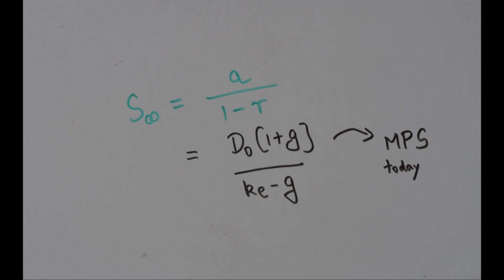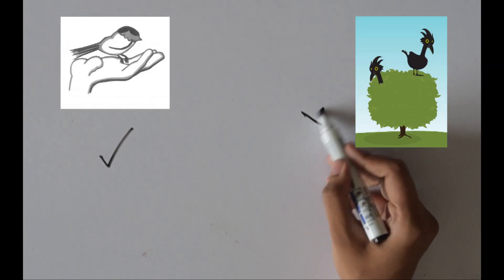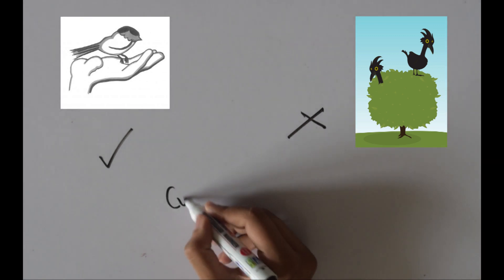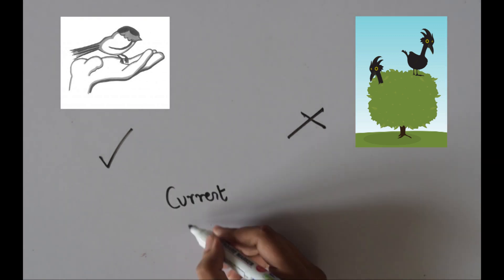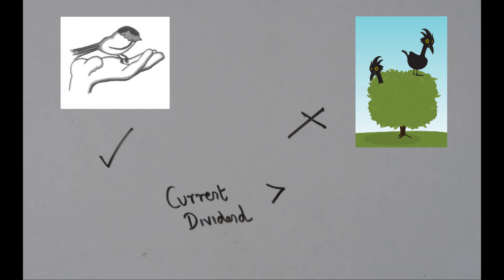Gordon says that a bird in hand is worth more than two in the bush. Shareholders value the current dividend more than the future gains they earn from the shares.